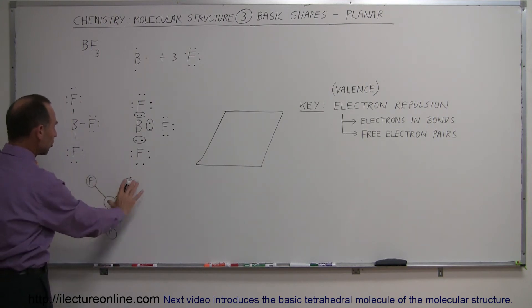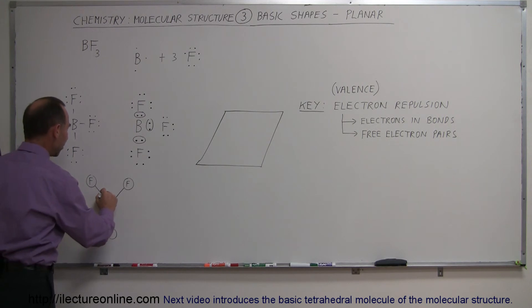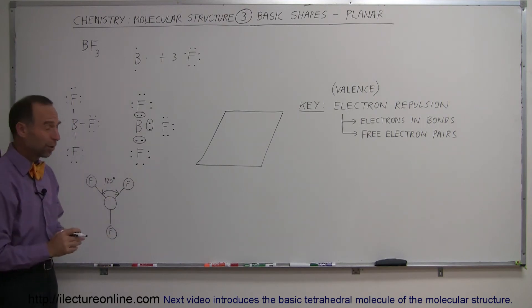And of course, if they're in a planar shape, the largest angle you can have would be 120 degrees. So each of the angles between the fluorines, any two pairs of fluorines, is 120 degrees here, here, and there.